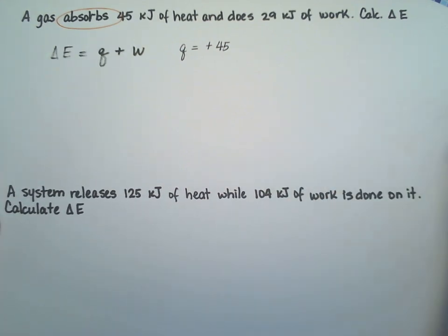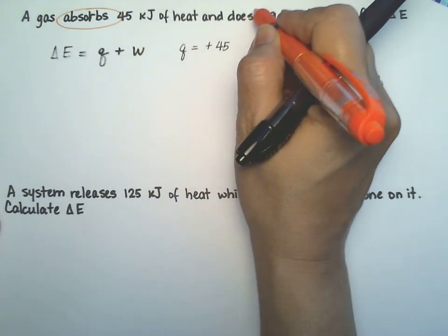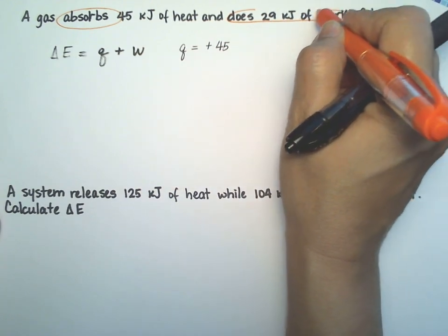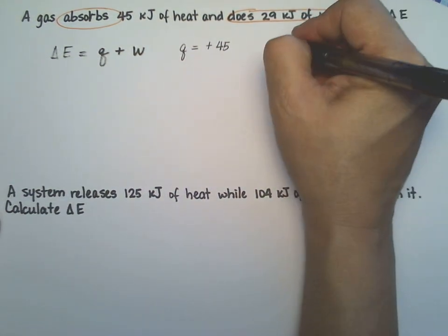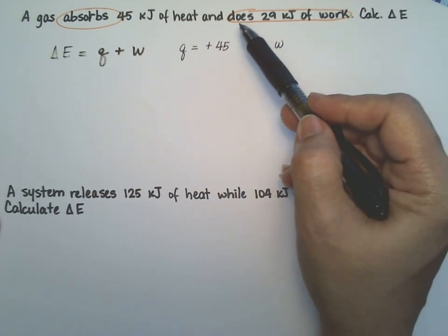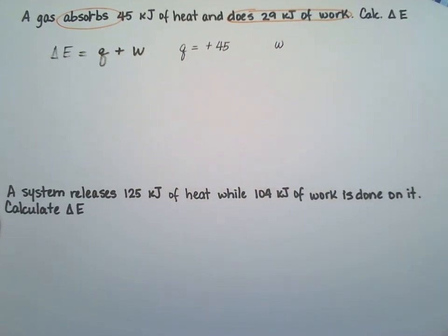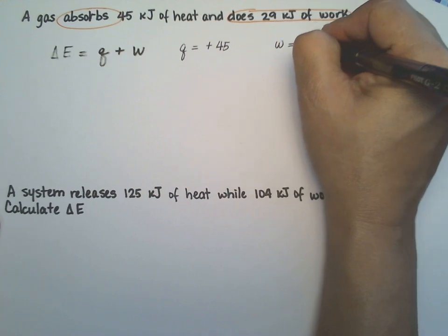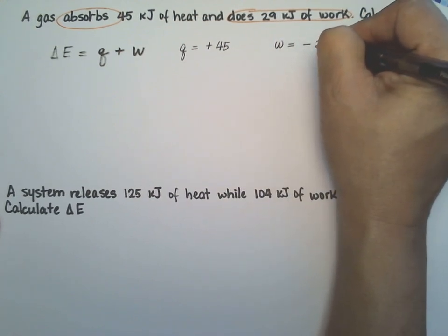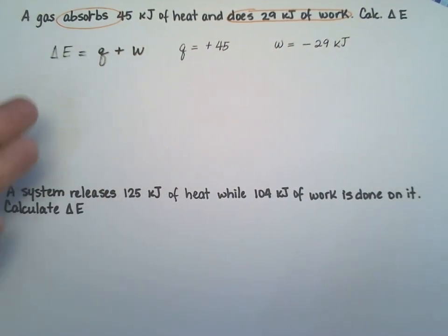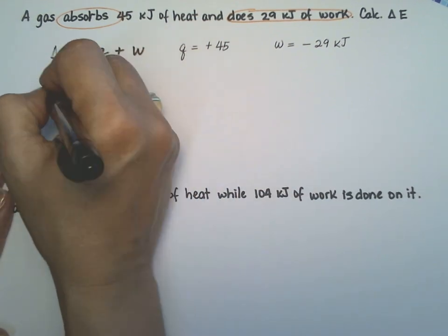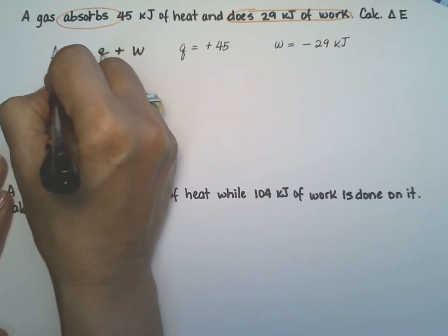And they tell us that the gas does 29 kilojoules of work. That's important because that's telling us that the actual gas is doing the work itself. So that is going to be a negative number. Notice that the problem doesn't tell you the signs of the heat or the work, but they actually write it down so you have to think about it.